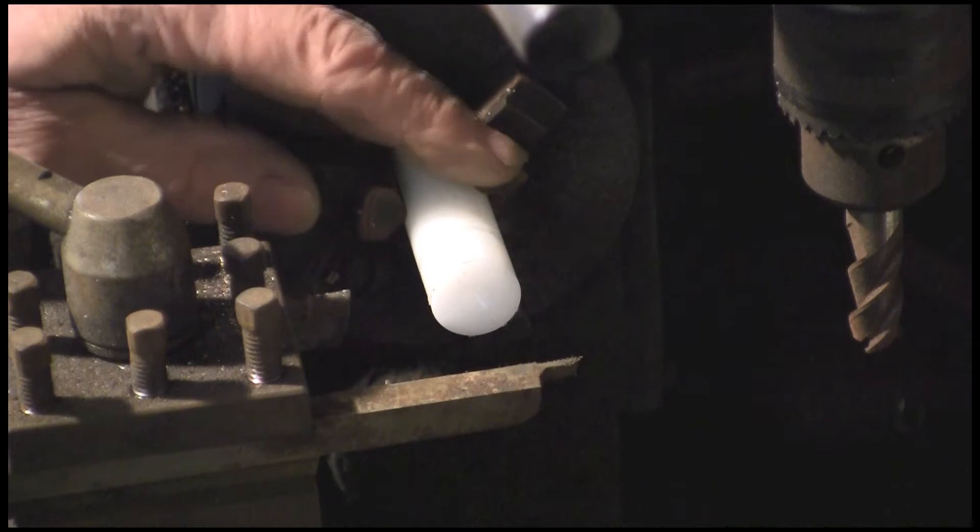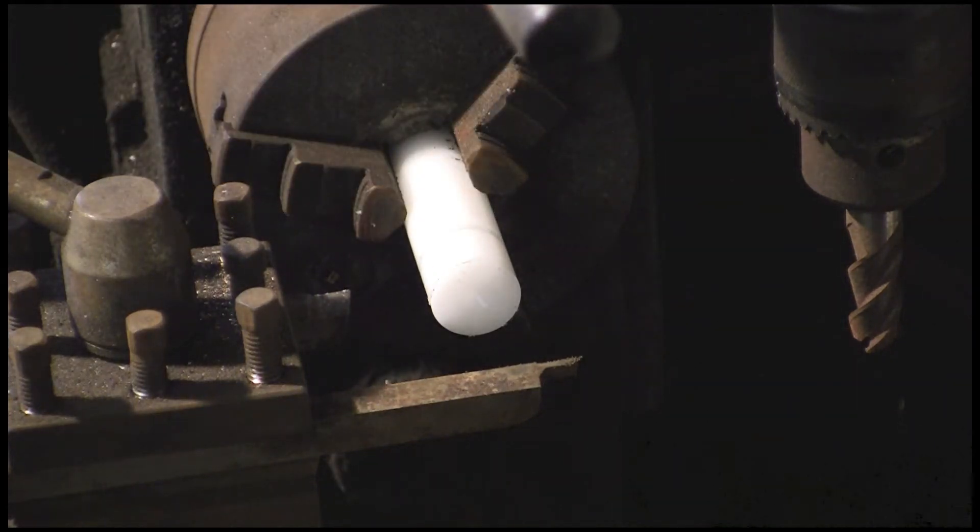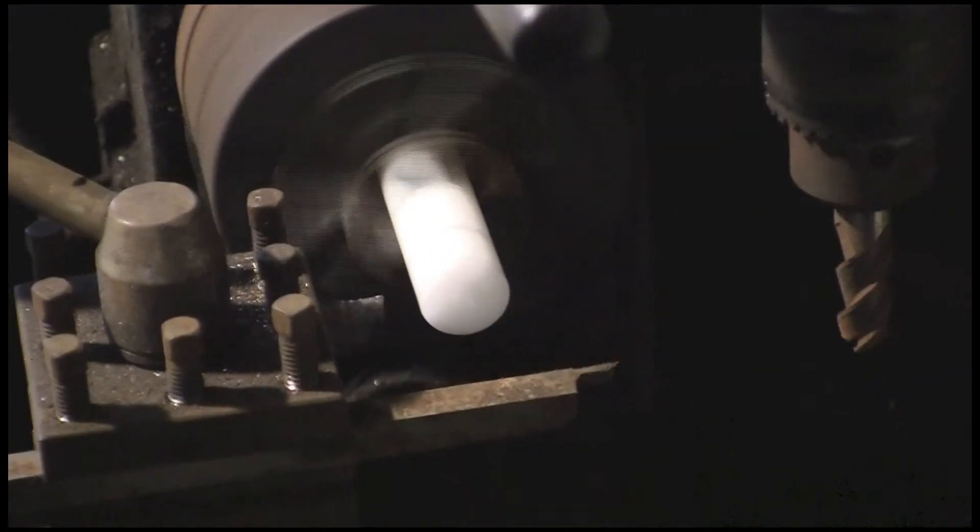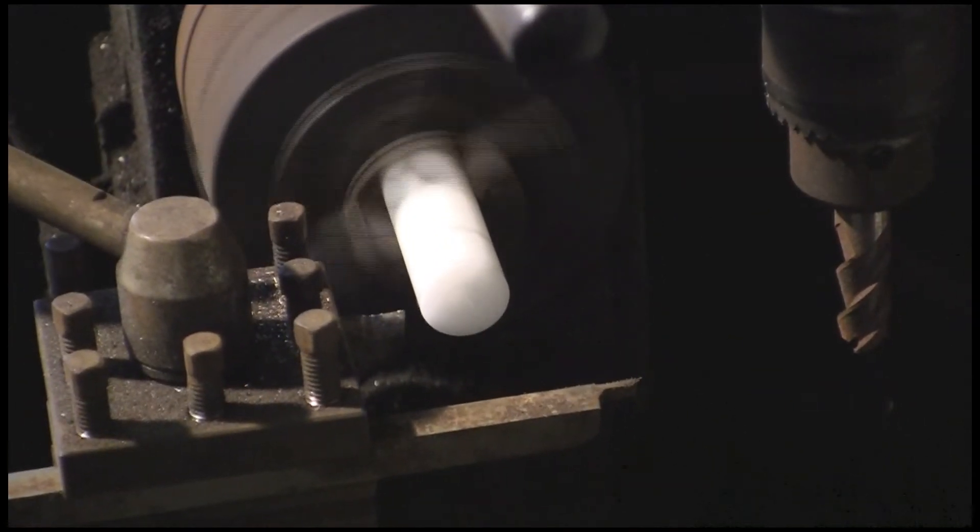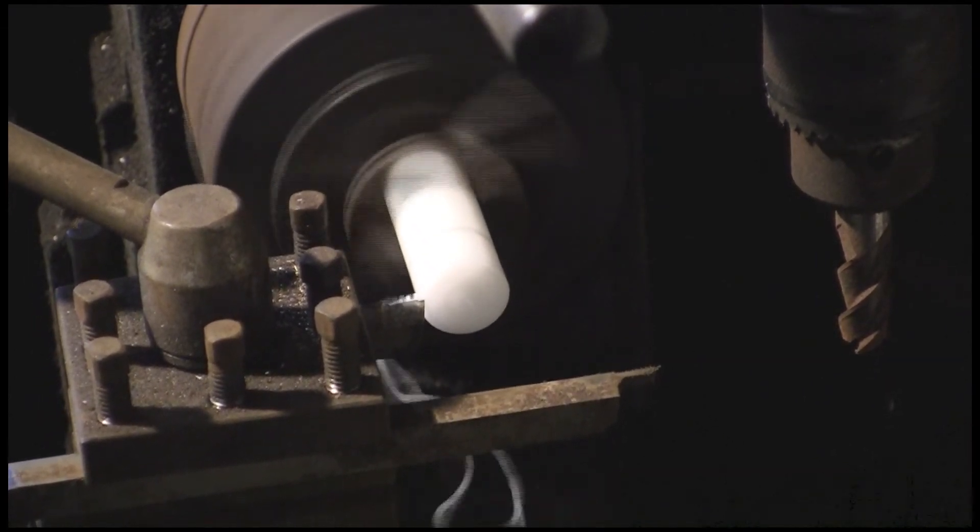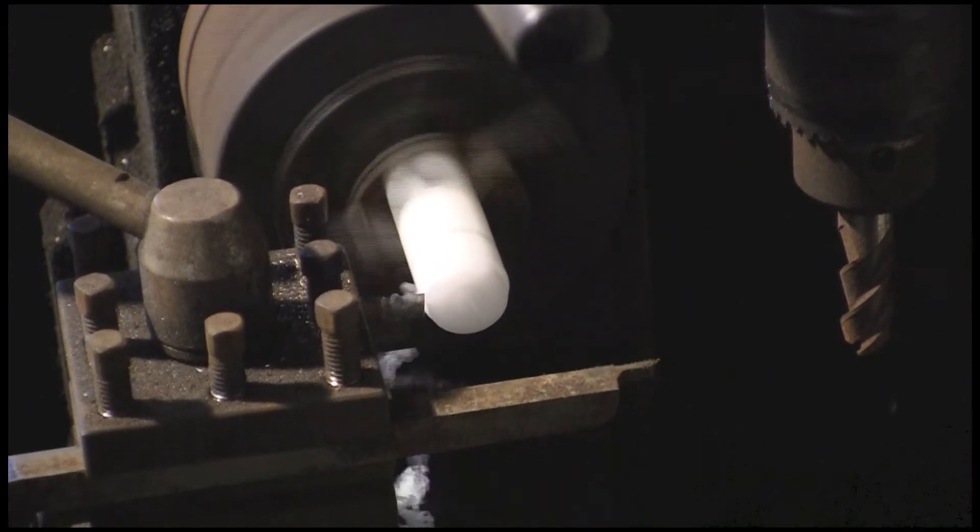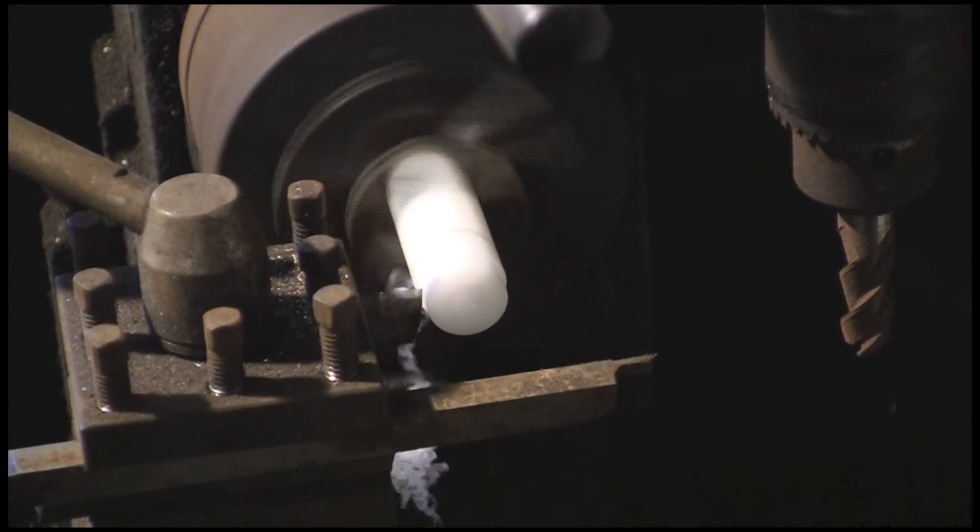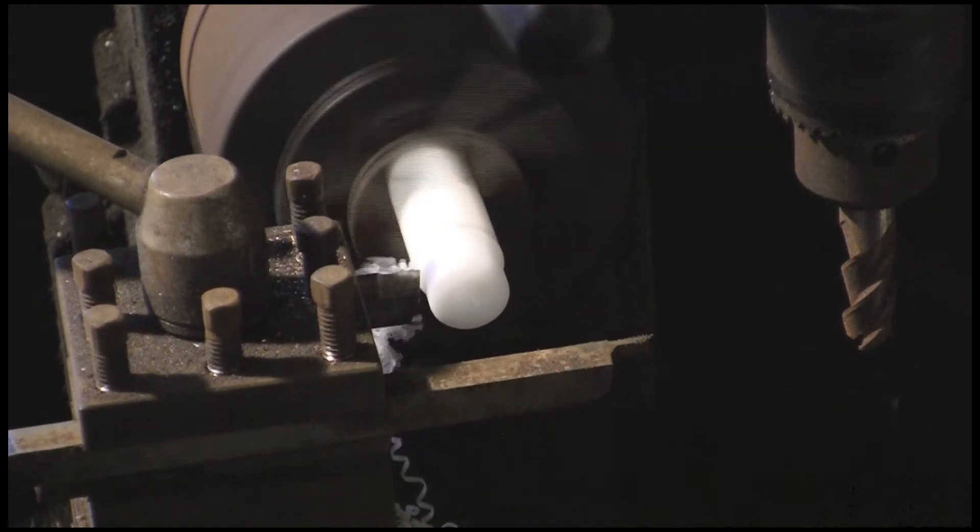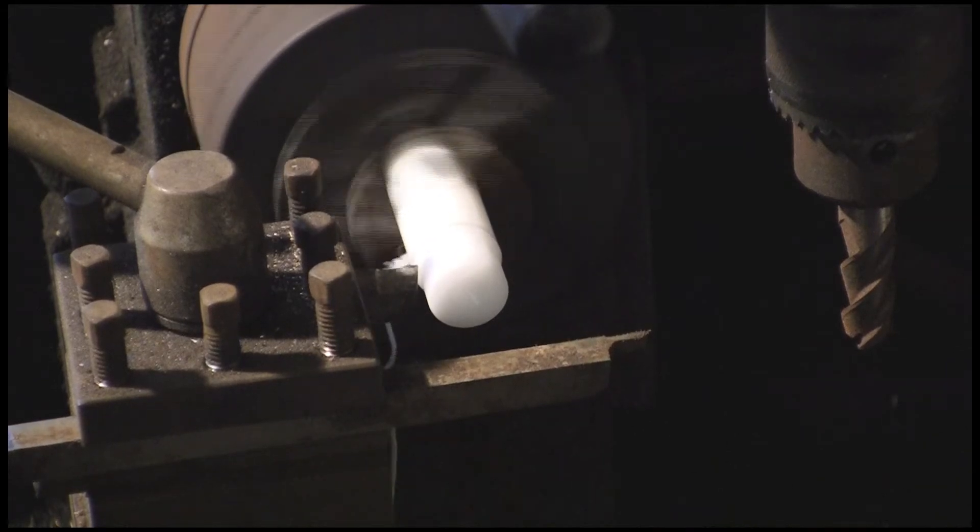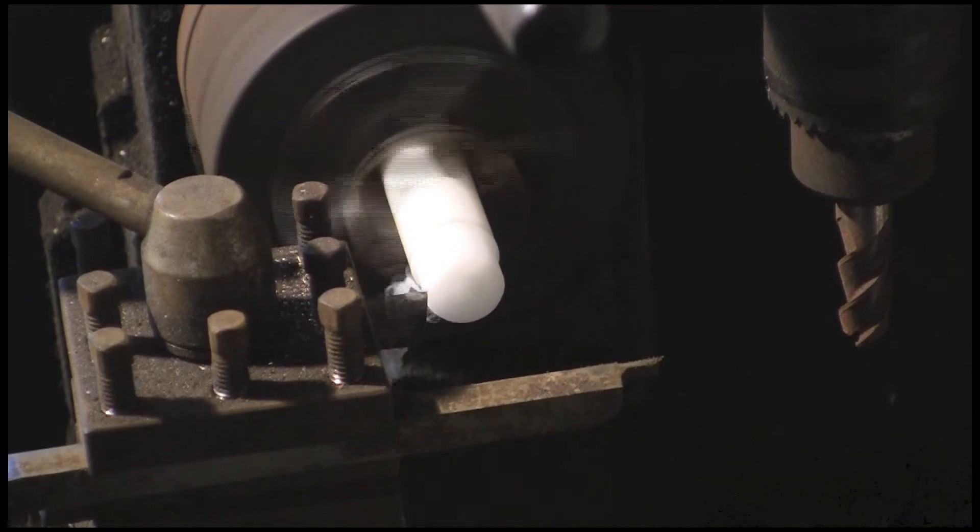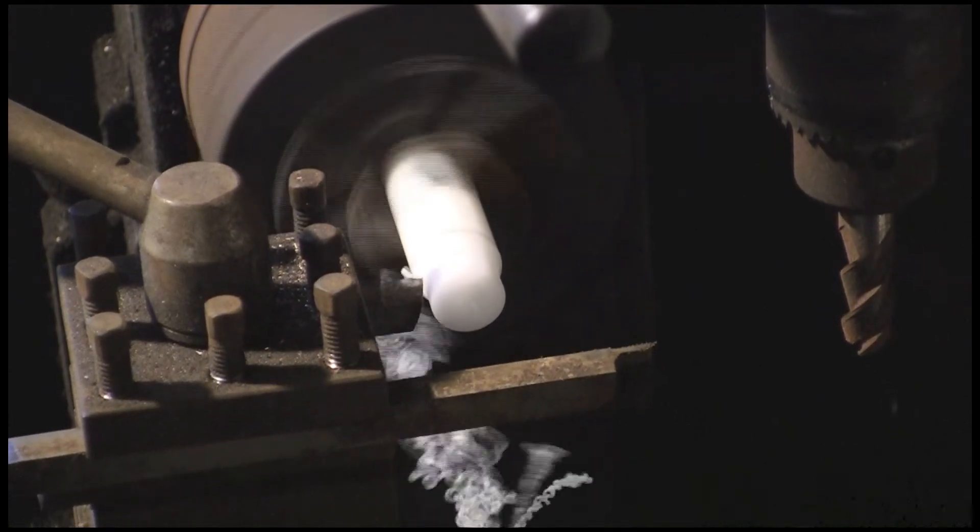I don't know if you can see here, I've put a little pencil mark which is where I want to go approximately to on the first cut. As I've never used this before I don't know how it cuts, so I'm going to go fairly gingerly to start with. It actually cuts quite nicely. It cuts more like aluminum than plastic.